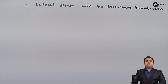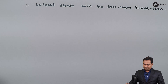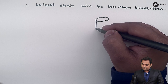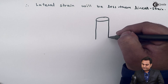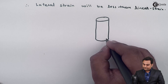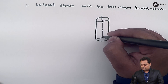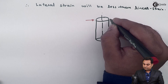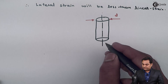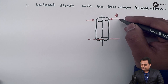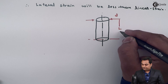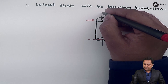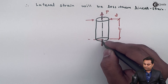Now I can explain the concept of Poisson's ratio with the help of a diagram, in which we have a rod having diameter d and its length would be l. Now over this rod, if we are applying a pull type of load on both the sides.